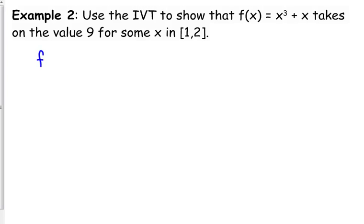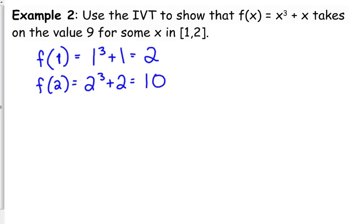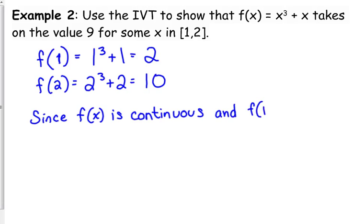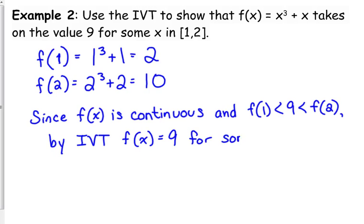So, we plug in the x values of the endpoints into the function. We get 2 for f of 1. And we get 10 for f of 2. So, since f of x is continuous. Technically, the continuous part should come first, but as long as you get it in there, in that explanation somewhere, it's fine. Since f of x is continuous, and f of 1 is less than 9, which is less than f of 2. So, f of x equals 9 for some x in that interval [1, 2].